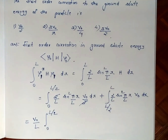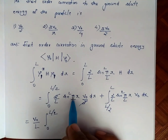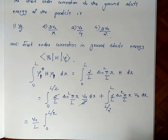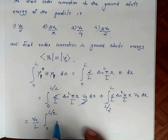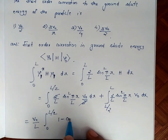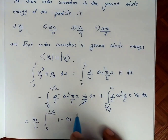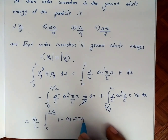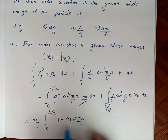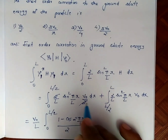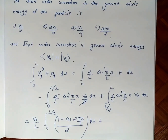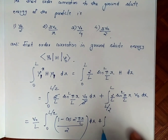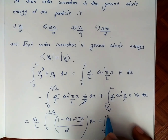We apply the trigonometric identity sin²(theta) = (1 - cos 2theta) / 2, substituting 1 minus cos(2 pi x / L) all divided by 2. We then integrate this from 0 to L/2 with the appropriate constants.